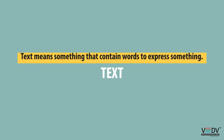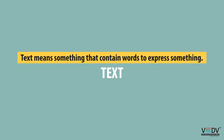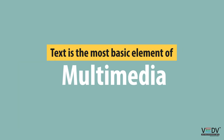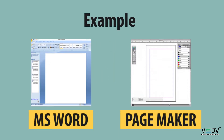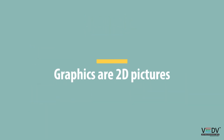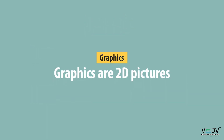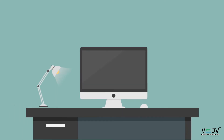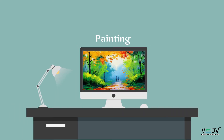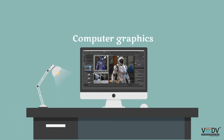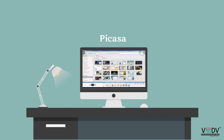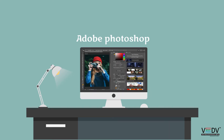Elements of Multimedia — Text. Graphics: A 2D picture that is shown through drawing, painting, posters, or computer graphics. Example: Picasso, Adobe Photoshop.